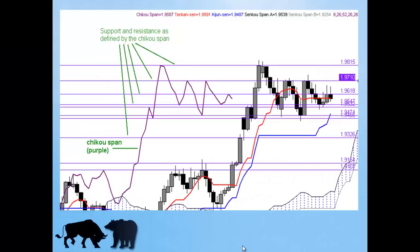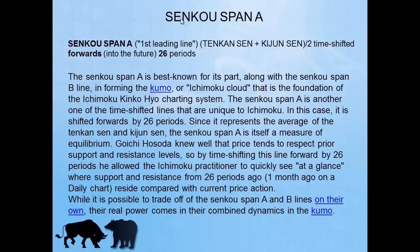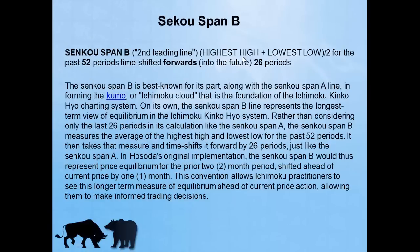The next two lines are called the Senkou Span A. What does Senkou Span A do? It adds the Tenkan line plus the Kijun line divided by 2, and it time shifts it forward 26 periods — so instead of going backwards, it throws it into the future 26 periods. The Senkou Span B line, which is the second leading line, takes the highest plus the lowest divided by 2 and shifts it forward 52 periods — for the last 52 periods, shifted forward 26 periods.